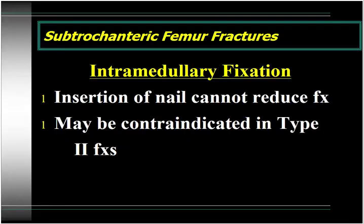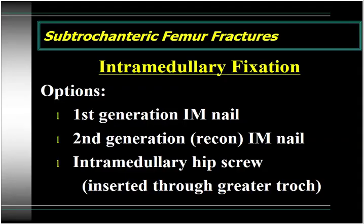Unlike a femoral shaft fracture where the nail itself can obtain reduction, with subtrochanteric fractures you basically have to have the fracture reduced before you place the implant. Also, in type 2 fractures with proximal extension into the piriformis fossa, intramedullary fixation may be contraindicated. Options for intramedullary fixation include a first-generation IM nail — not commonly used now — a second-generation or reconstruction-type nail, or a cephalomedullary device such as the intramedullary hip screw, which can be inserted through the greater trochanter and can be used in type 2 fractures with proximal extension where a standard IM nail would not be suitable.